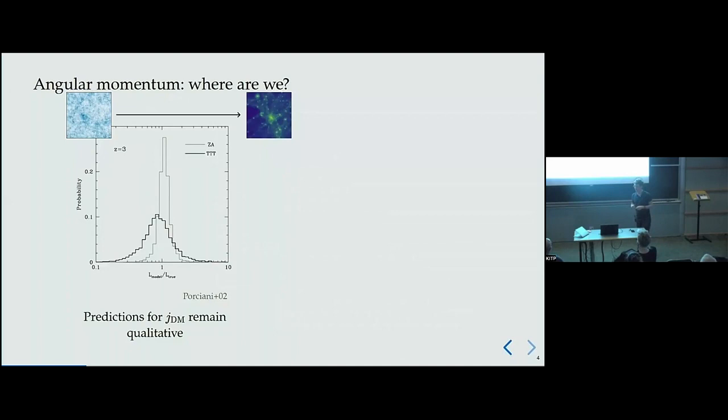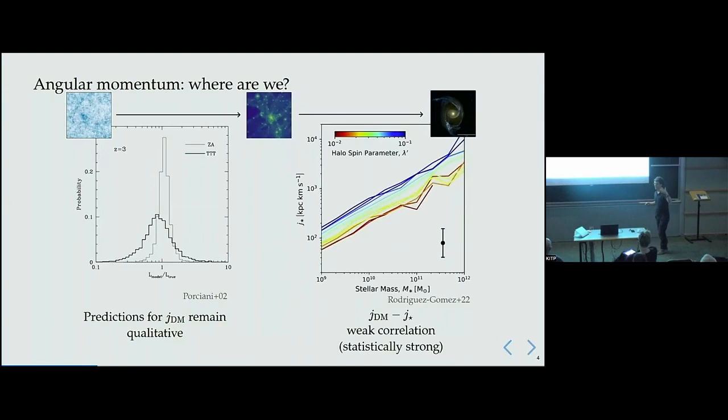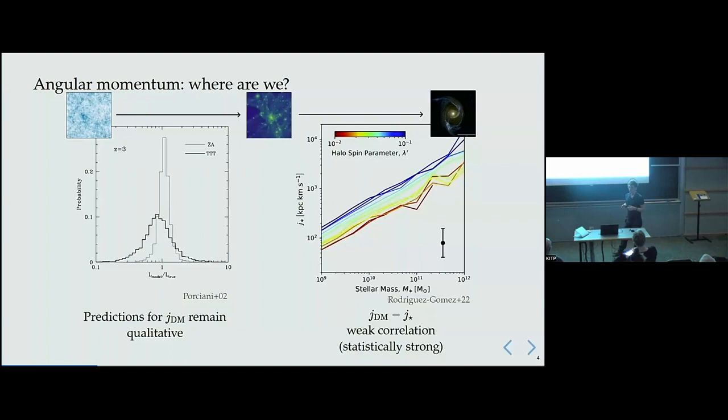The second step is going from dark matter halos to galaxies. Can we assign a spin to a galaxy given the spin of the dark matter halo? What we find is that the dark matter to stellar angular momentum relation is quite weak — you can have a slowly rotating dark matter halo with a fast rotating galaxy and vice versa. There is a statistically significant but weak correlation. The question is: why is stellar angular momentum not just tracking the dark matter angular momentum?